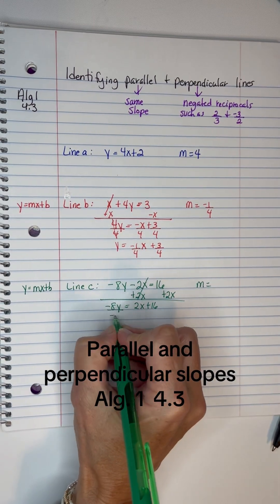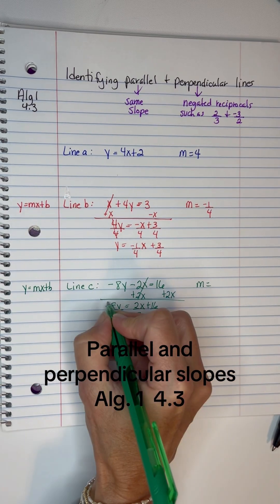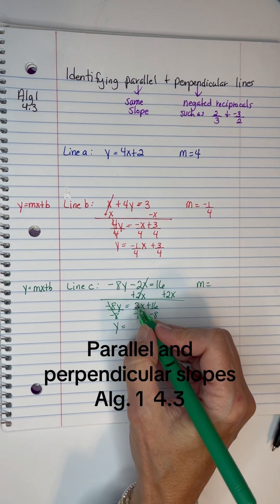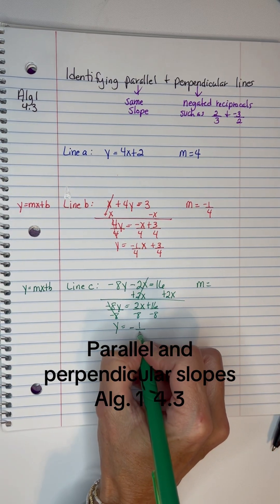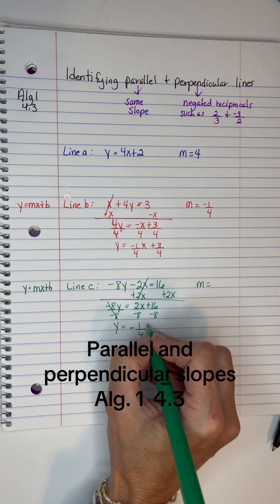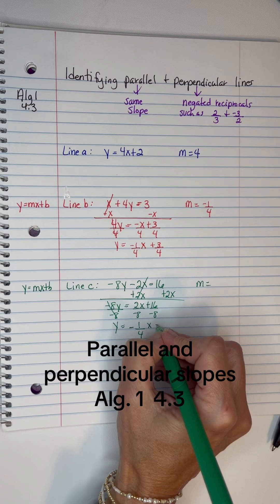Then I will divide by -8, and you have to divide every term by -8. So I have y equals, you've got to simplify 2 over -8. That's the same as 1/4. You divide them both by 2. So 1/4 x, and then 16 divided by -8 is -2.